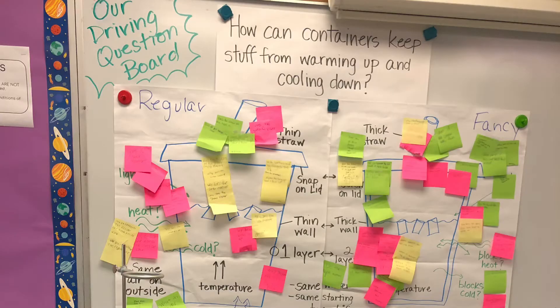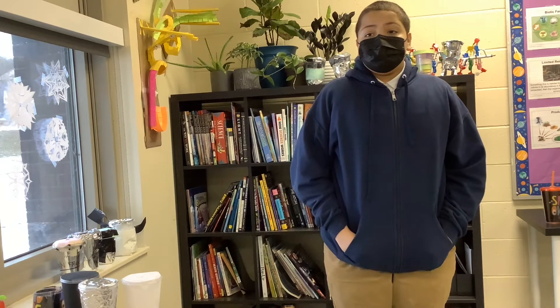In class, we made a driving question board and created models of each cup system. We developed hypotheses on how the heat was getting to the coffee. We did investigations to try to answer our questions, test our ideas, and update our cup models. We used both thermometers and digital temperature probes to collect our data, and looked at whether the lid mattered, if the material mattered, and if the layers made a difference.